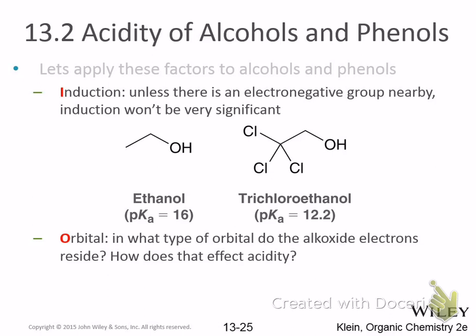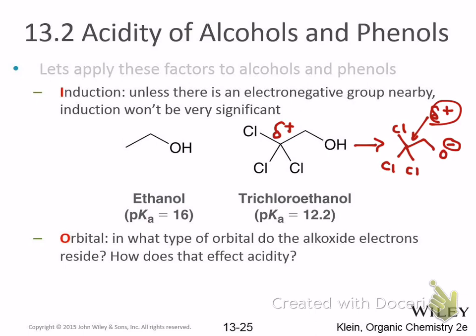This is induction. Ethanol versus trichloroethanol: ethanol's pKa is around 16, trichloroethanol is about 12.2. The chlorines are more electronegative than carbon, so they pull out electron density, creating a partial positive charge near the oxygen. When you remove the hydrogen and put a negative charge on oxygen, that partial positive charge helps to stabilize the negative charge — that's what makes it more acidic. Electronegative groups help make it more acidic by induction.